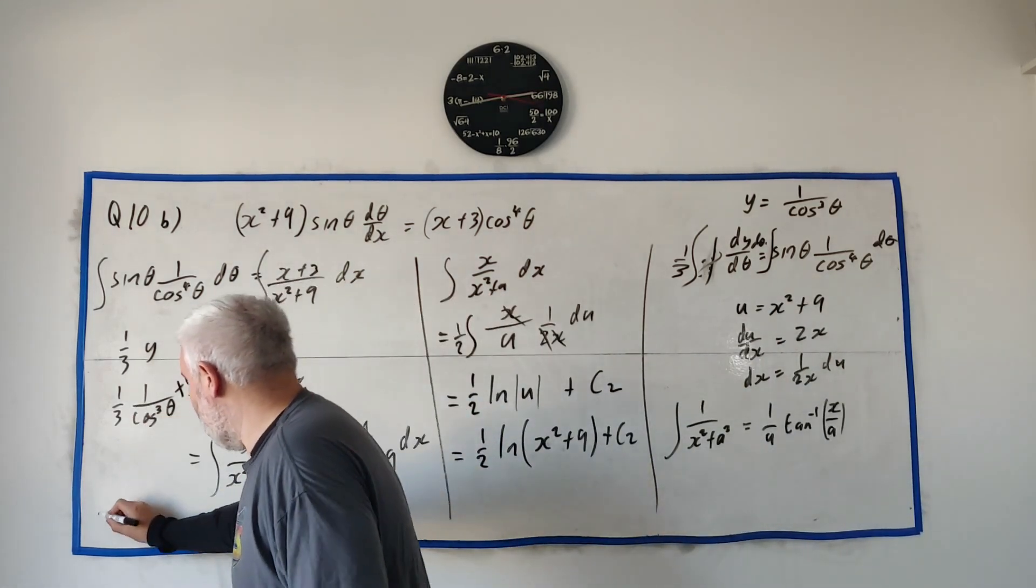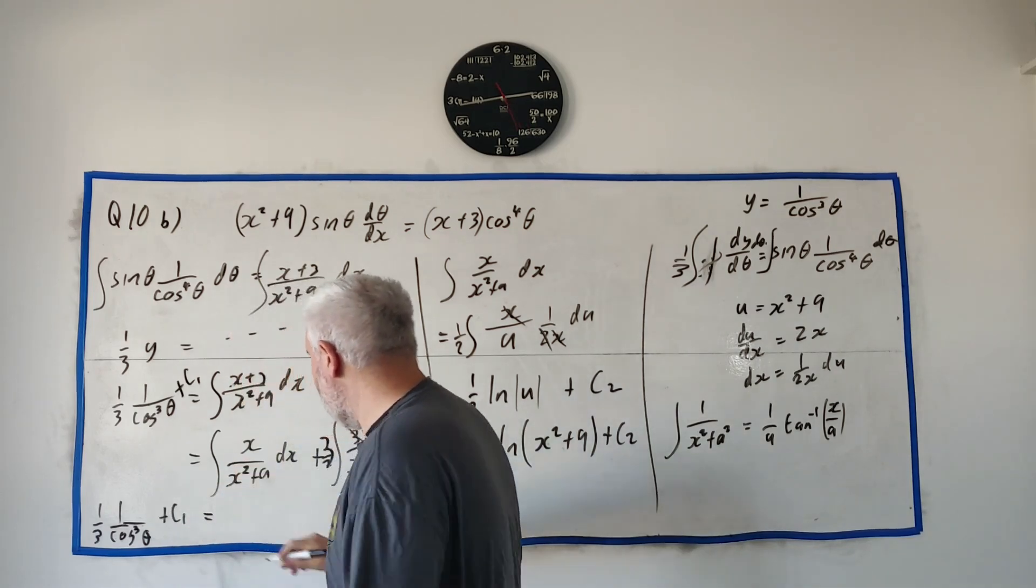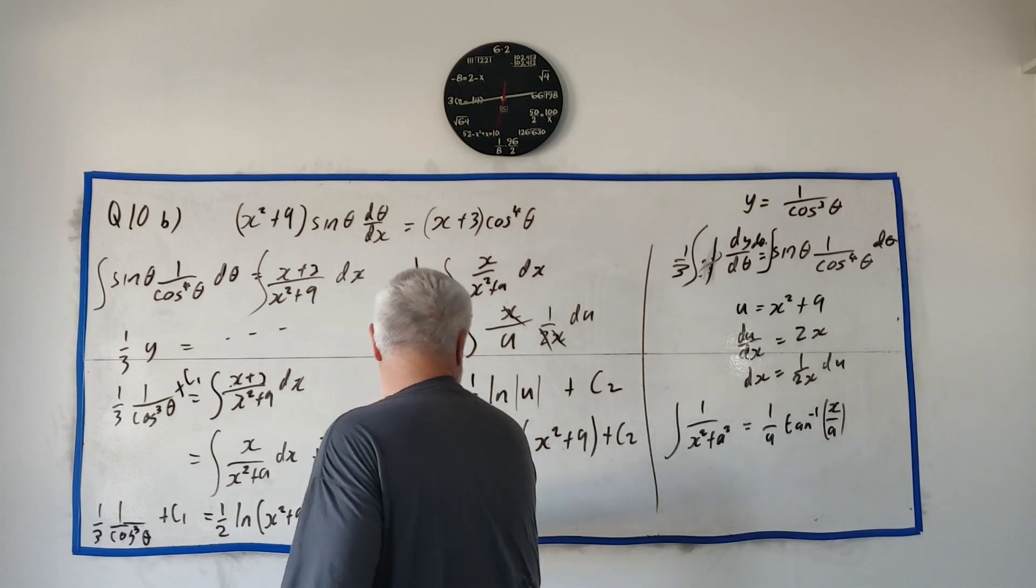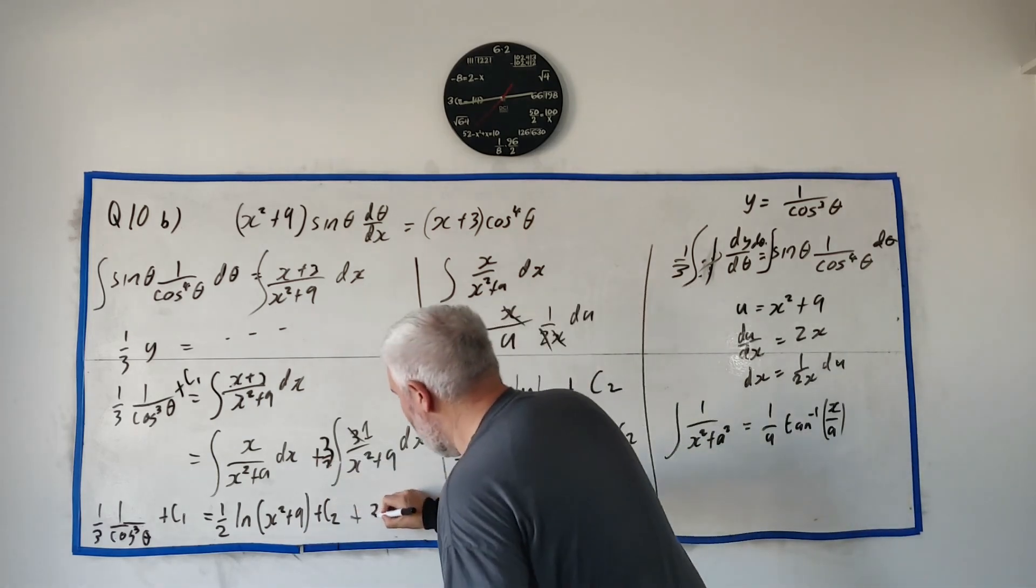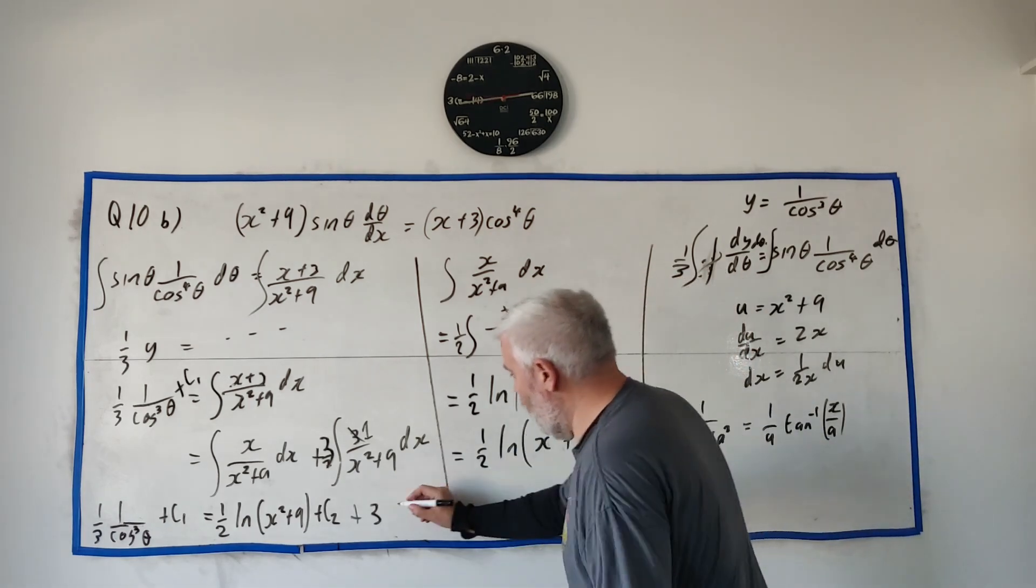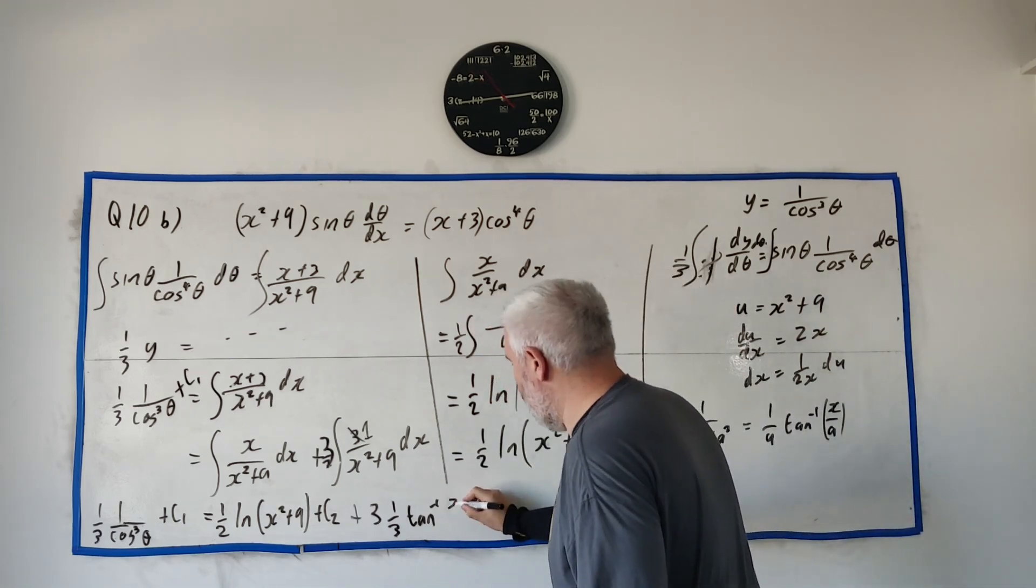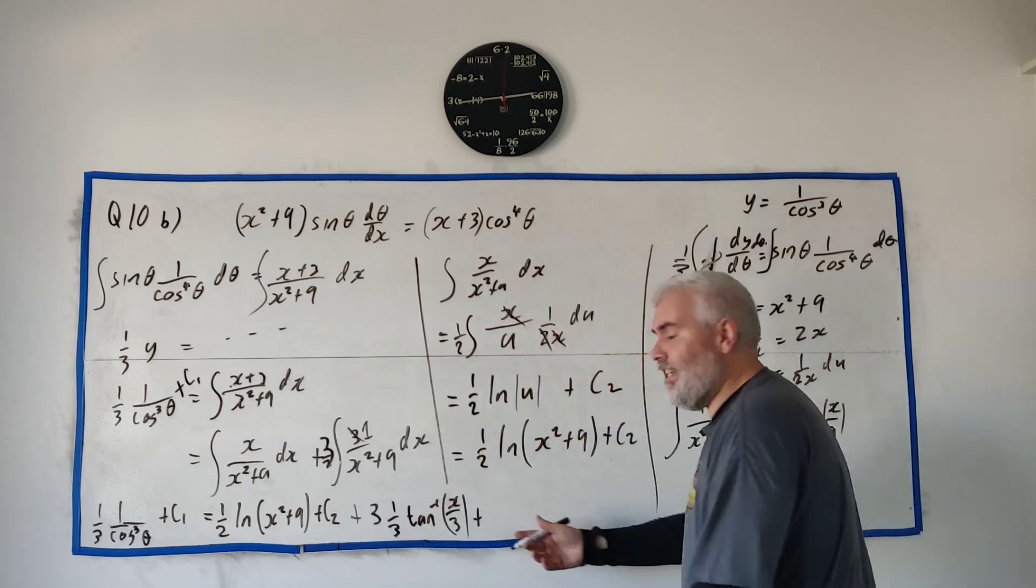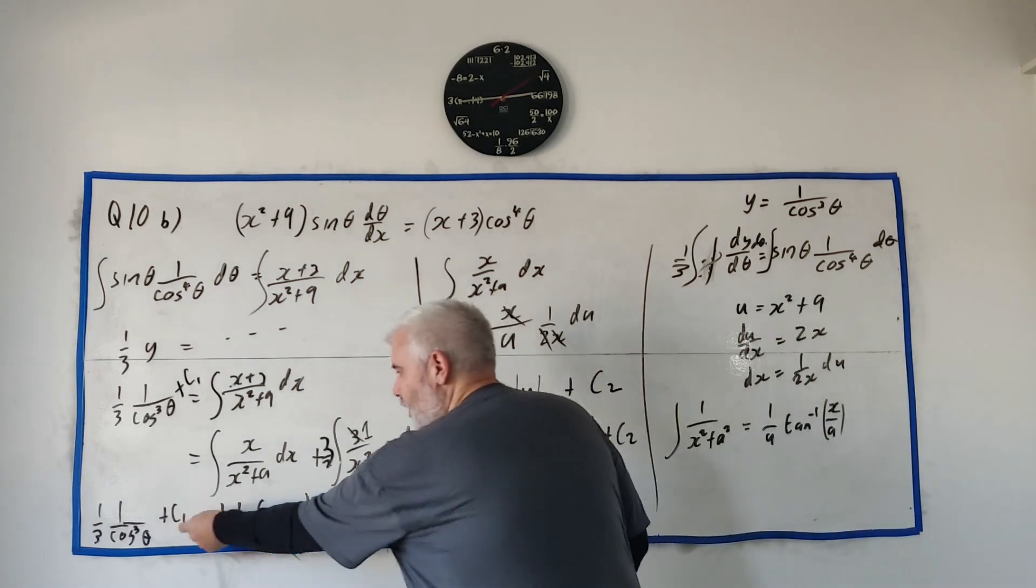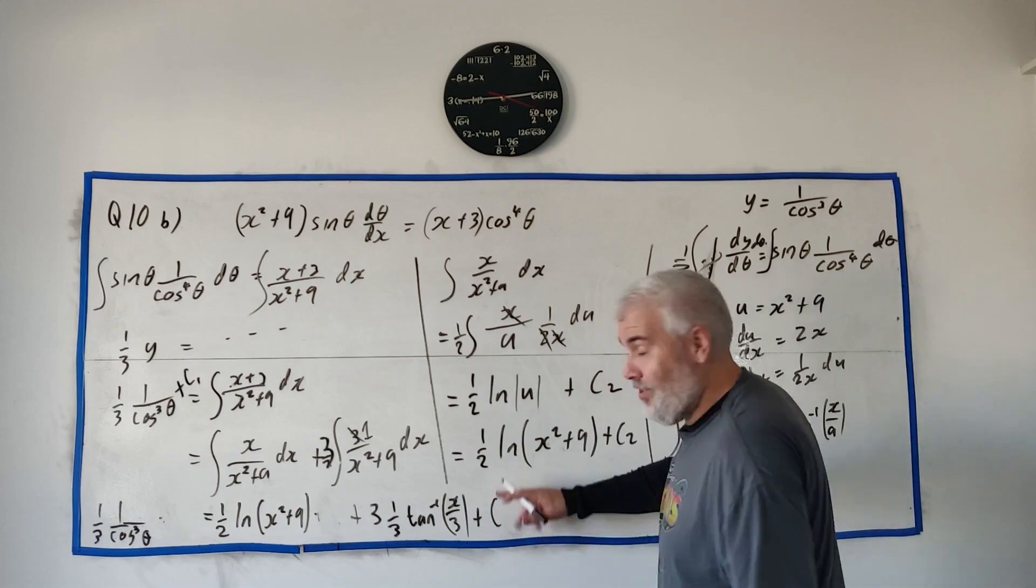Let me write all the answers down. The first part was 1 over 3 times 1 over cosine cubed theta plus c1. Equals the second part: a half natural log x squared plus 9 plus c2. And this last part, the integral of 3 over x squared plus 9, following the formula, 9 is 3 squared, becomes 1 over 3 inverse tan of x over 3 plus c3. But constants can be combined—a constant plus or minus constants is just a constant. I'll call it just c.